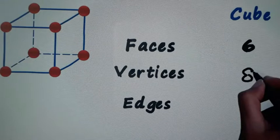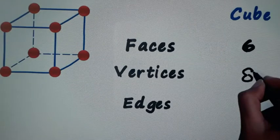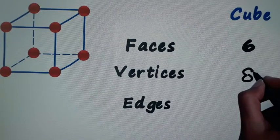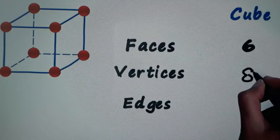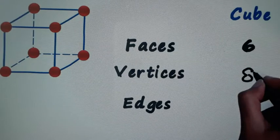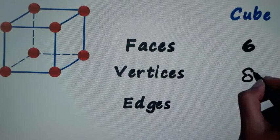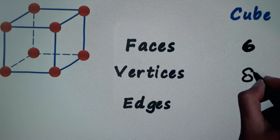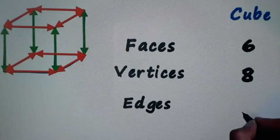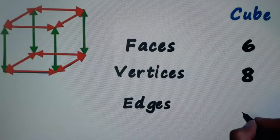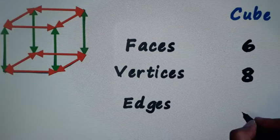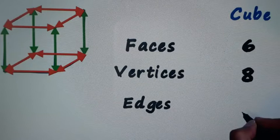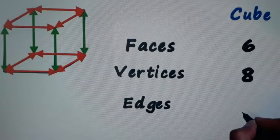There are eight vertices: four are at the bottom and four are at the top. So total eight vertices are there in case of a cube. Now we have to count number of edges. Four edges are at the bottom, four are at the top, and the rest four are like pillars.